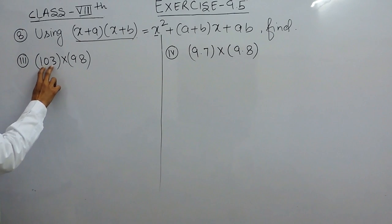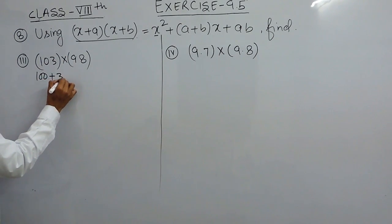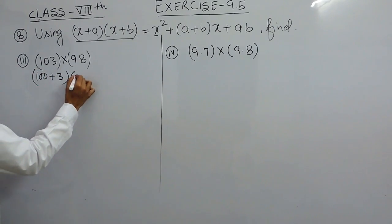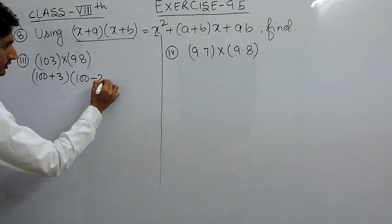These two numbers are close to 100, so we can consider x as 100. This will be 100 plus 3 and this will be 100 minus 2.